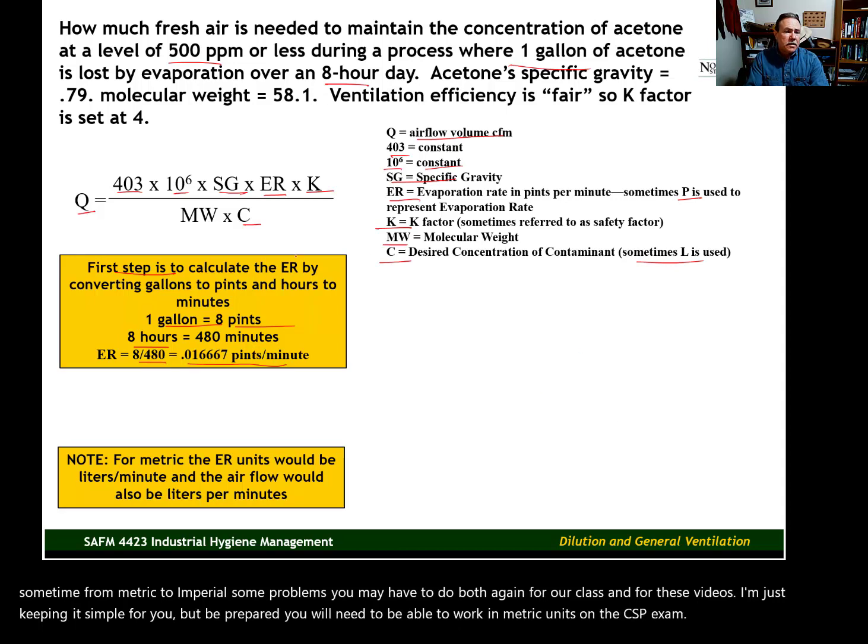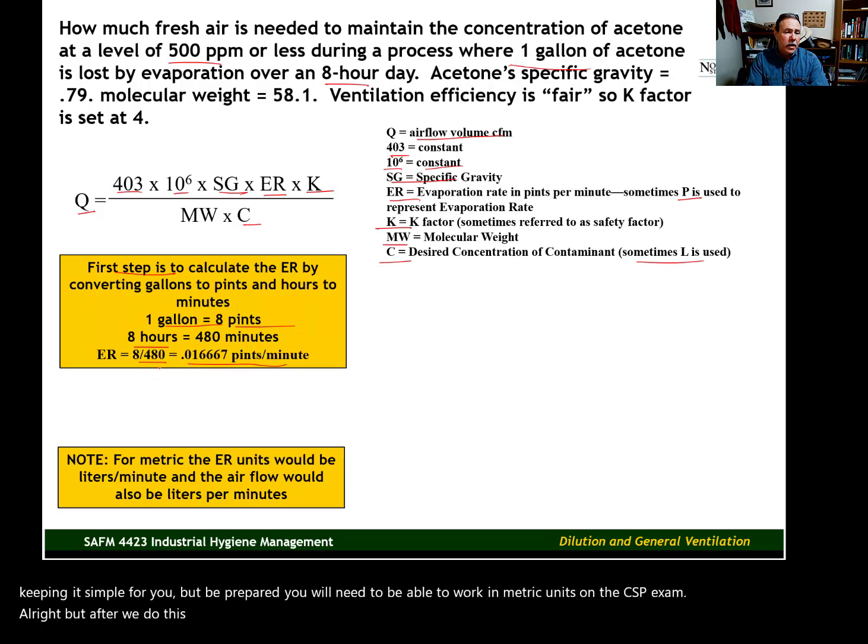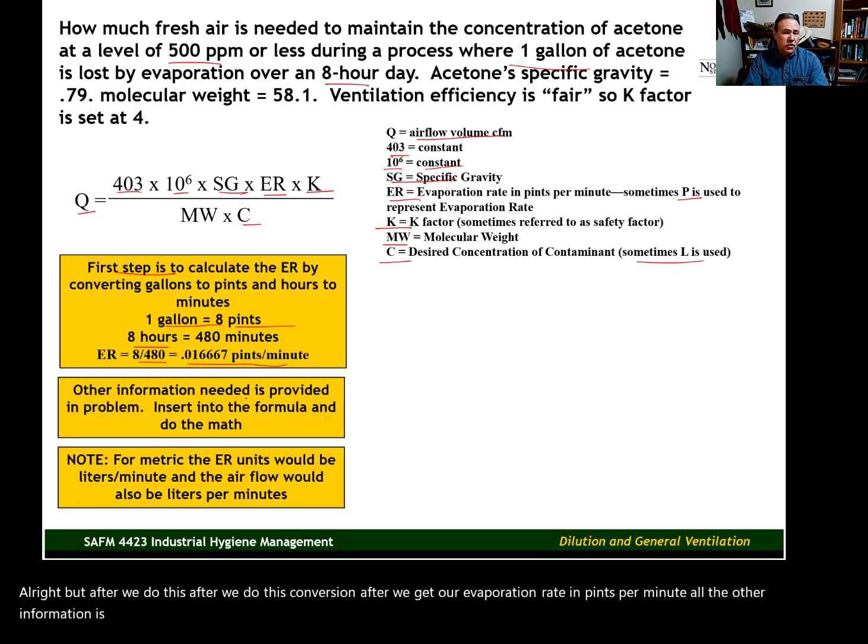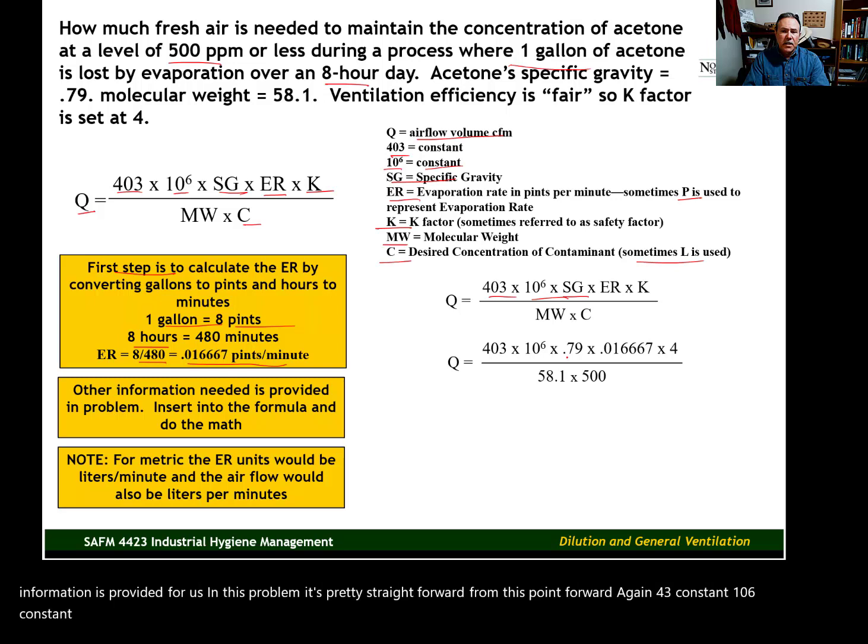All right. But after we do this conversion, after we get our evaporation rate in pints per minute, all the other information is provided for us in this problem. That's pretty straightforward from this point forward. Again, 403 constant, 10^6 constant. Specific gravity is 0.79. Evaporation rate is 0.016667, and you could get by with just rounding that to three decimal places if you want to. Then our K factor is given to us, and we plug that in. Molecular weight is given to us, and the desired concentration.